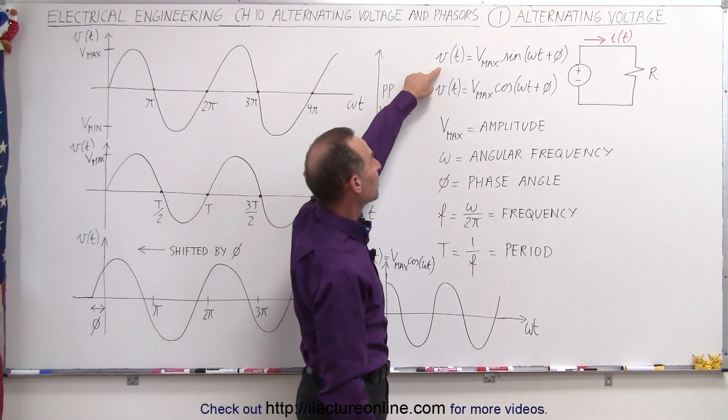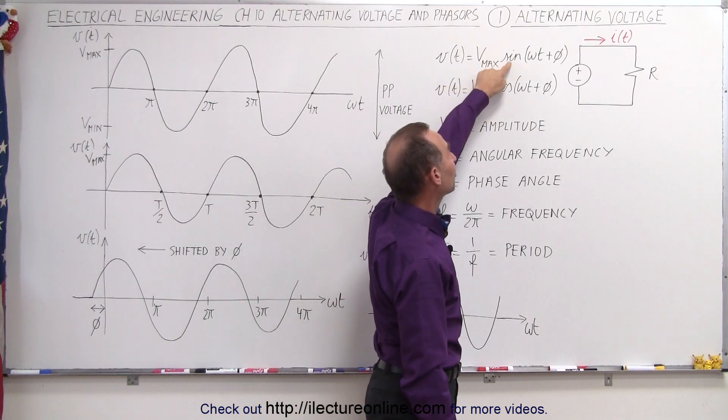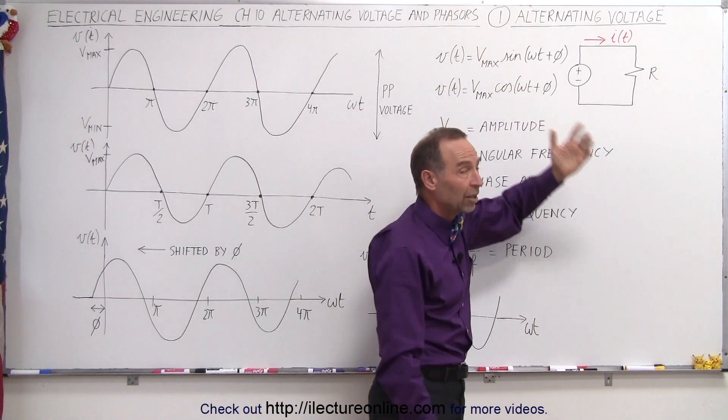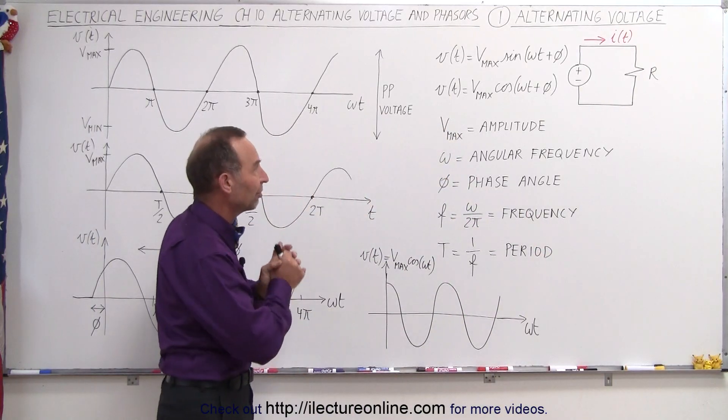The equation for the voltage can be expressed as the maximum voltage, Vmax, times either the sine or the cosine of omega t plus potentially a phase angle φ, and we'll explain a lot more about what phase angles are.